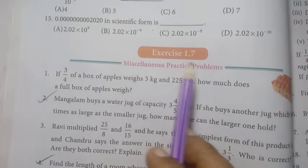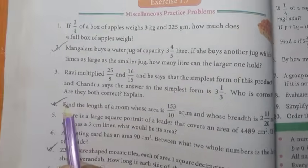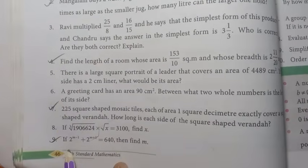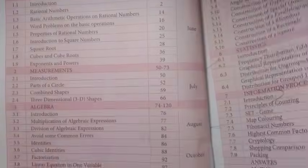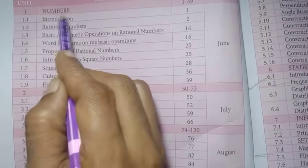Next, in exercise 1.7, second one, fourth one, seventh one, and ninth one are important. This completes chapter one, unit one: numbers.